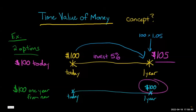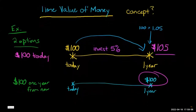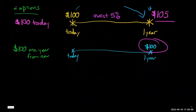In the other option where you get a hundred dollars at the end of the year, you didn't have the option of investing it because you didn't have the money. So when you get money sooner rather than later, it has more value because you can invest it and earn a return. That's what people mean when they say the time value of money — a cash flow today, all else equal, is worth more than the same cash flow in the future.